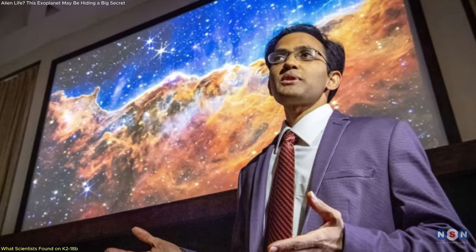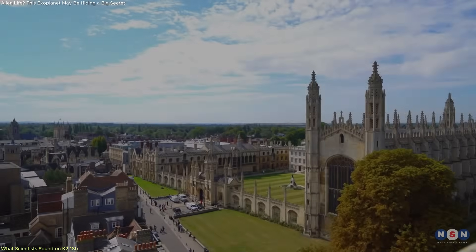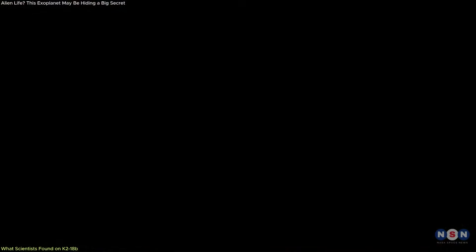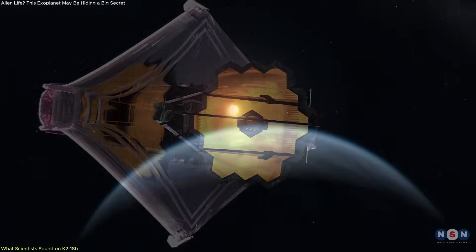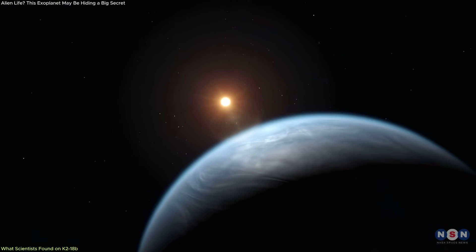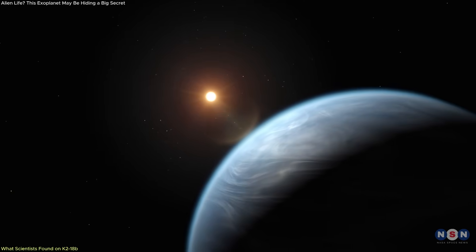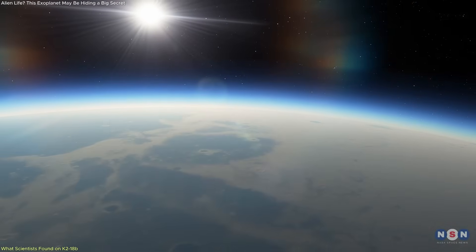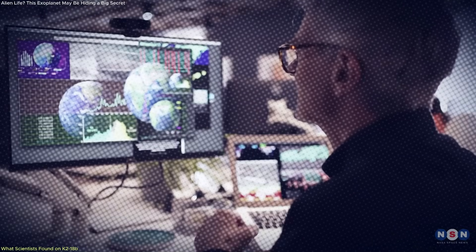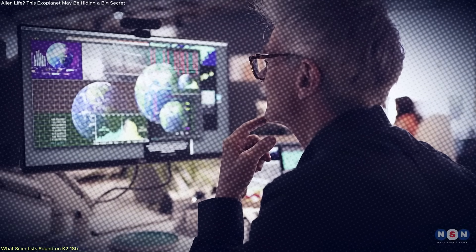The excitement began with a study from Dr. Niku Madusuddin's team at the University of Cambridge. They used NASA's James Webb Space Telescope, JWST, to observe the atmosphere of K2-18b, a Hycean world possibly covered by a deep ocean and wrapped in a hydrogen-rich atmosphere. That alone made it an intriguing target for habitability studies.